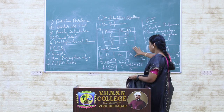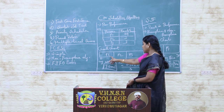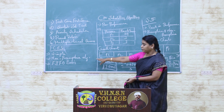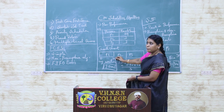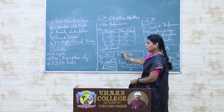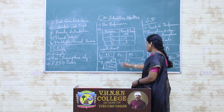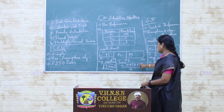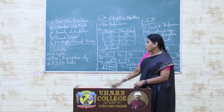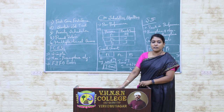This is the procedure to draw the Gantt chart. After drawing the chart, we calculate the average waiting time. The first process P1 has a waiting time of 0 because it came first and immediately occupied the CPU. The second process P2 has a waiting time of 24 milliseconds, because P1's execution time was 24. The third process P3 has a waiting time of 27 milliseconds. Averaging these: 0 plus 24 plus 27, divided by 3, gives an average waiting time of 17 milliseconds.